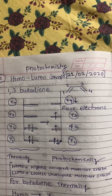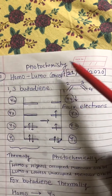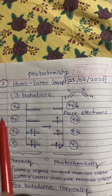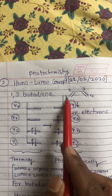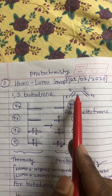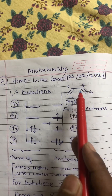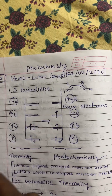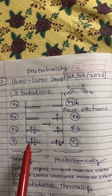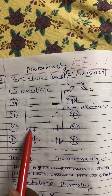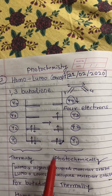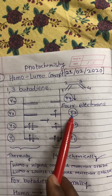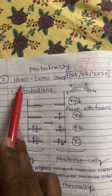In continuation with photochemistry, we will see the HOMO-LUMO concept. Let us consider 1,3-butadiene. In pericyclic reactions, butadiene has molecular orbitals ψ1, ψ2, ψ3, and ψ4. Thermally, ψ1 and ψ2 have 2 electrons each, and photochemically one of the electrons from ψ2 migrates to ψ3. Now we are going to see HOMO and LUMO.